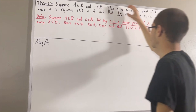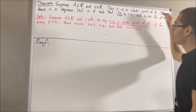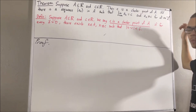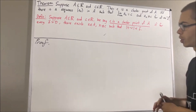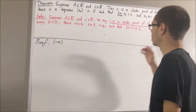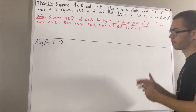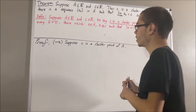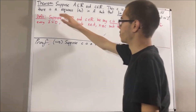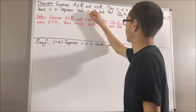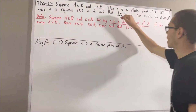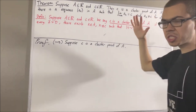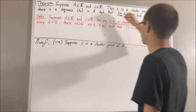So now let's get into proving this theorem. We're trying to prove a statement containing if and only if, so let's start out by proving the forward direction. To do that, let's suppose C is a cluster point of A. From here, we want to show that there is a sequence of elements in A that has these two properties.